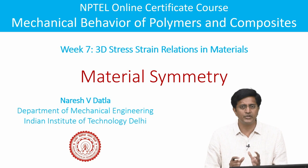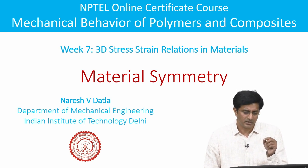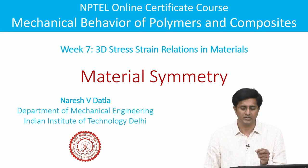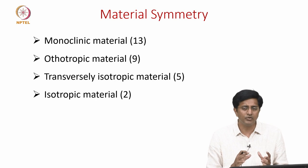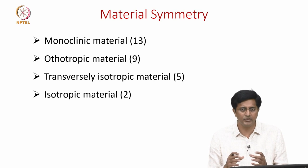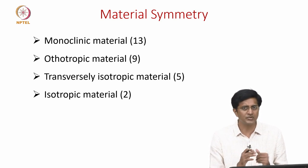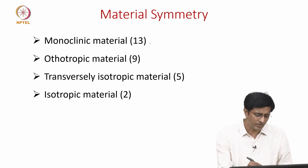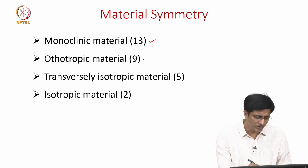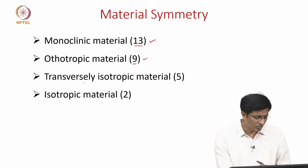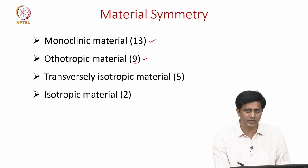One major difference from the previous video is that earlier we were only looking at stresses at one single point in the material, but now we will be looking at what is the stress-strain relation for any point in the material. That is when we get the material symmetries. Which means until now we have not even touched upon what material we choose — irrespective of the material it gets down to 21 constants. But in this video we will show: if the material is monoclinic then the independent constants reduce to 13; if orthotropic, to 9; transversely isotropic has only 5; and isotropic materials have 2 independent constants.